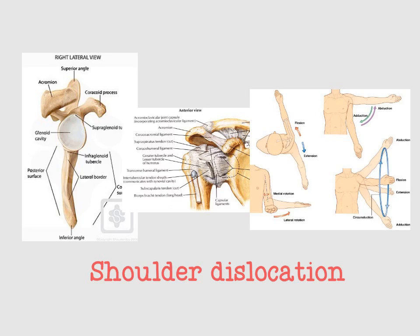Another risk factor of shoulder joint dislocation is laxity of the ligaments that surround and fixate this joint. There are many ligaments that surround and fixate the humeral-glenoid joint. The coraco-humeral ligament is one of them, and the transverse humeral ligament is the second. Laxity of these ligaments will lead in many cases to shoulder joint dislocation.